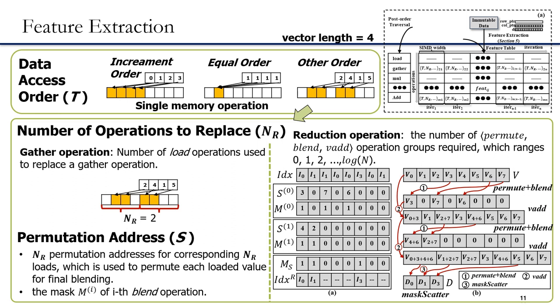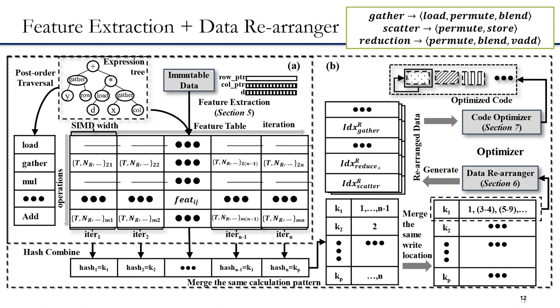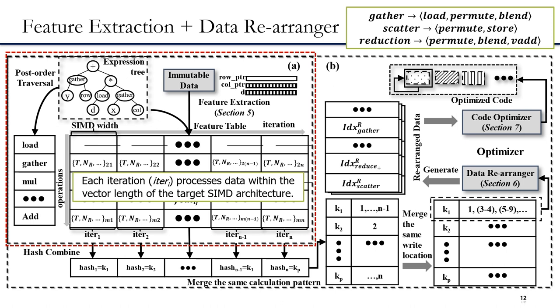Based on the expression tree, feature extraction extracts the computation patterns within the SIMD vector lengths to generate the feature table. As shown in figure A, we inspect the immutable data of gather, scatter, and reduction operations, and store the extracted patterns into the feature table, which captures the data access and computation patterns of SPMV. Each column of the feature table is the computation process for one loop iteration, and each row represents the corresponding operations in the fast-order traversal of the expression tree. Each column is denoted as E3K where K is the case iteration, and each iteration processes data within the vector length of the target SIMD architecture.